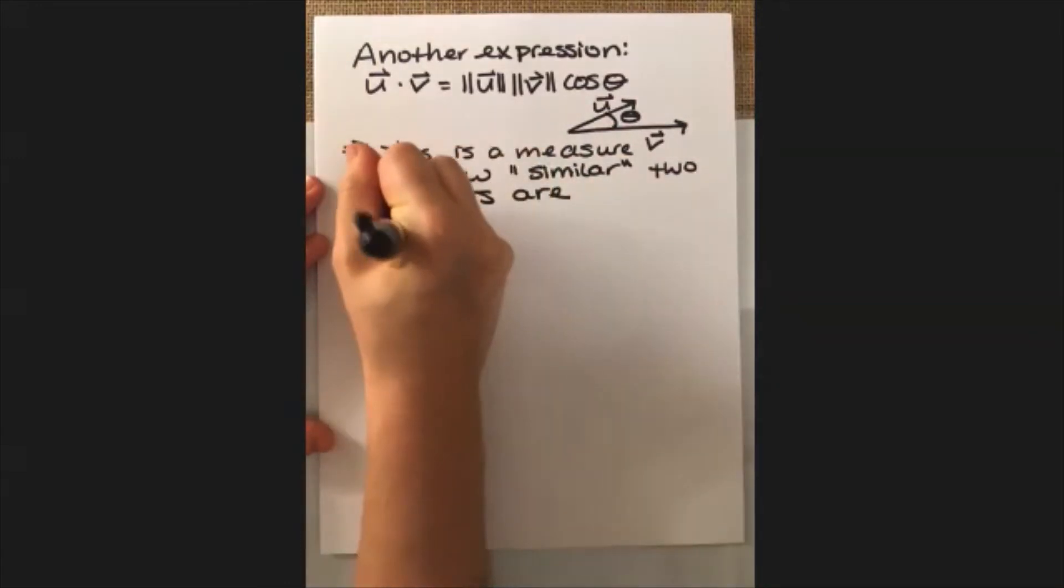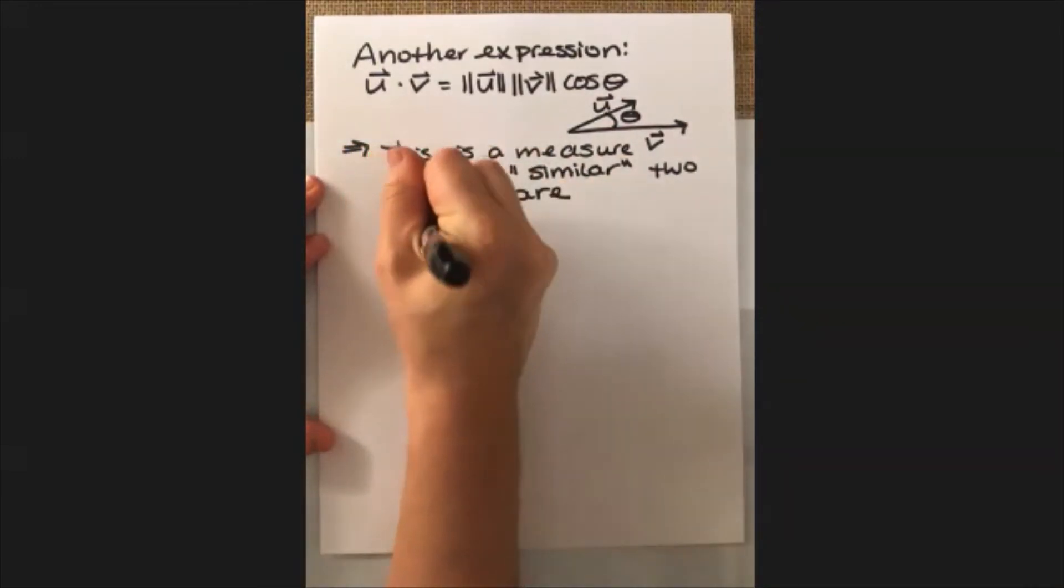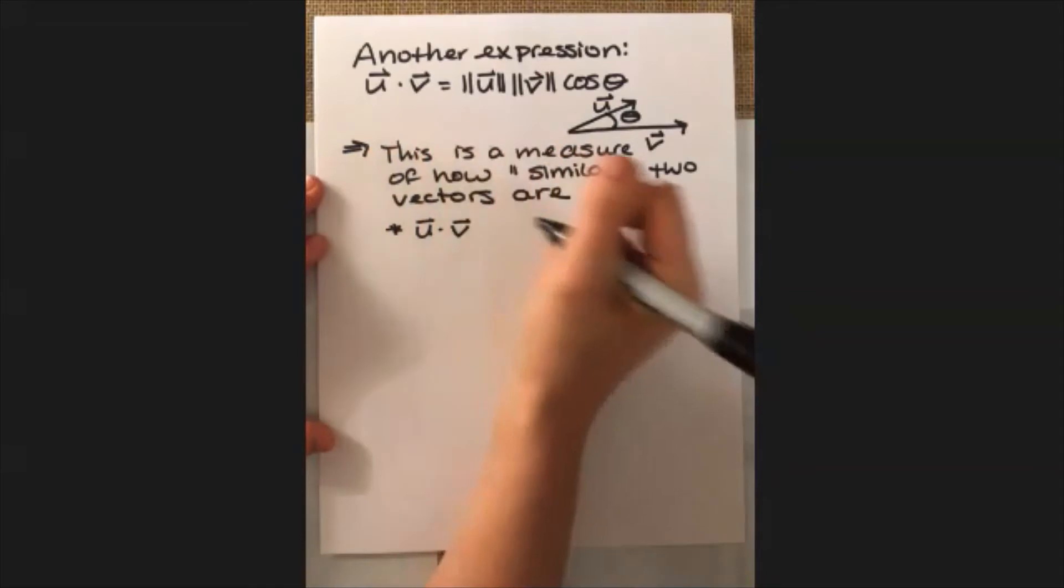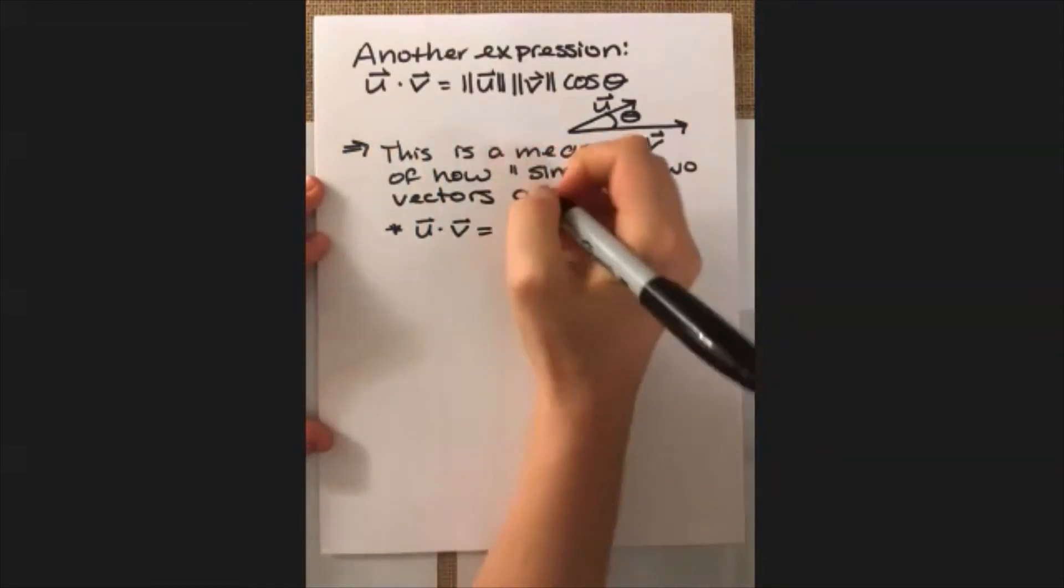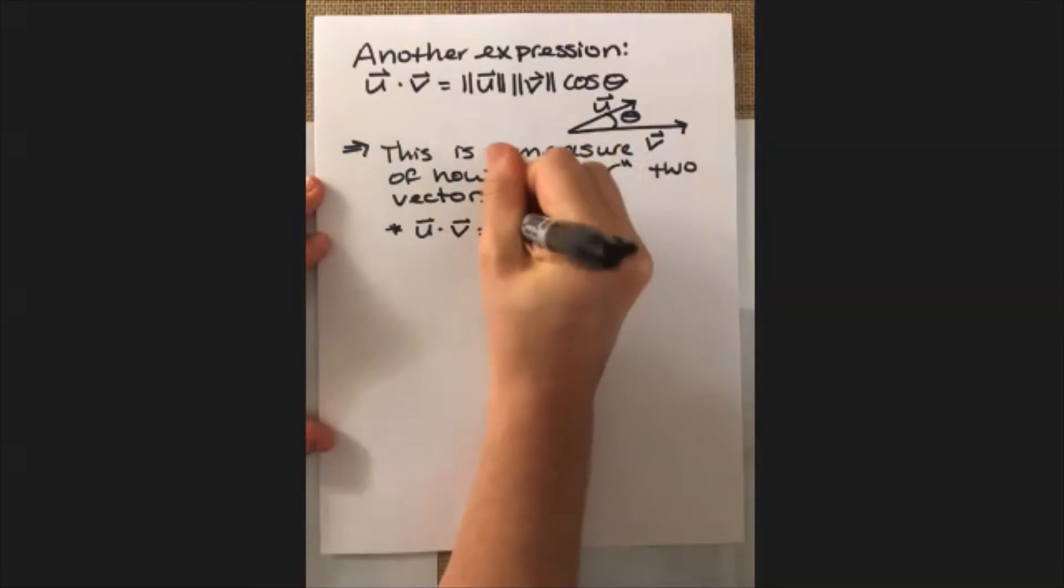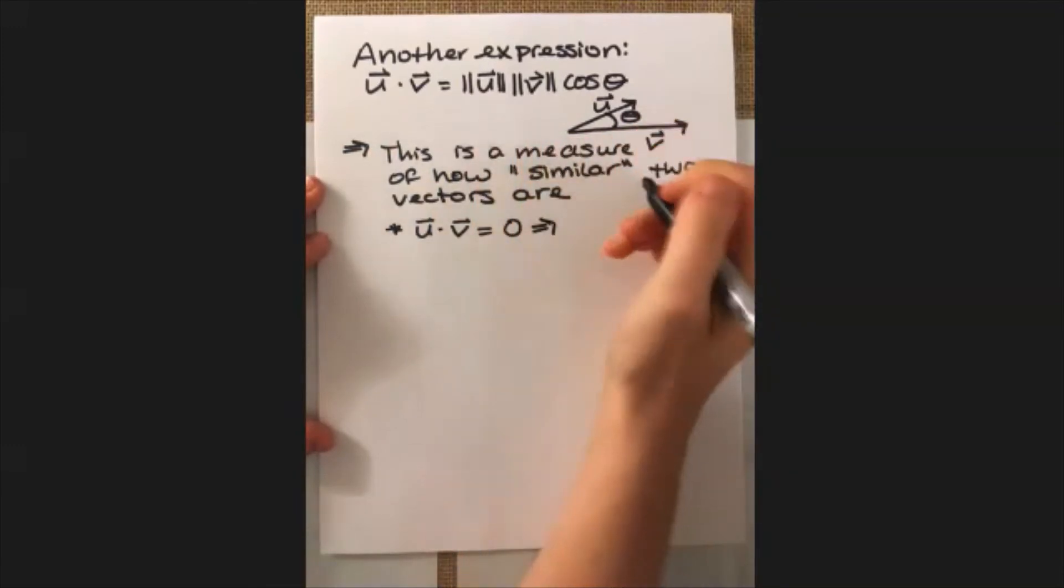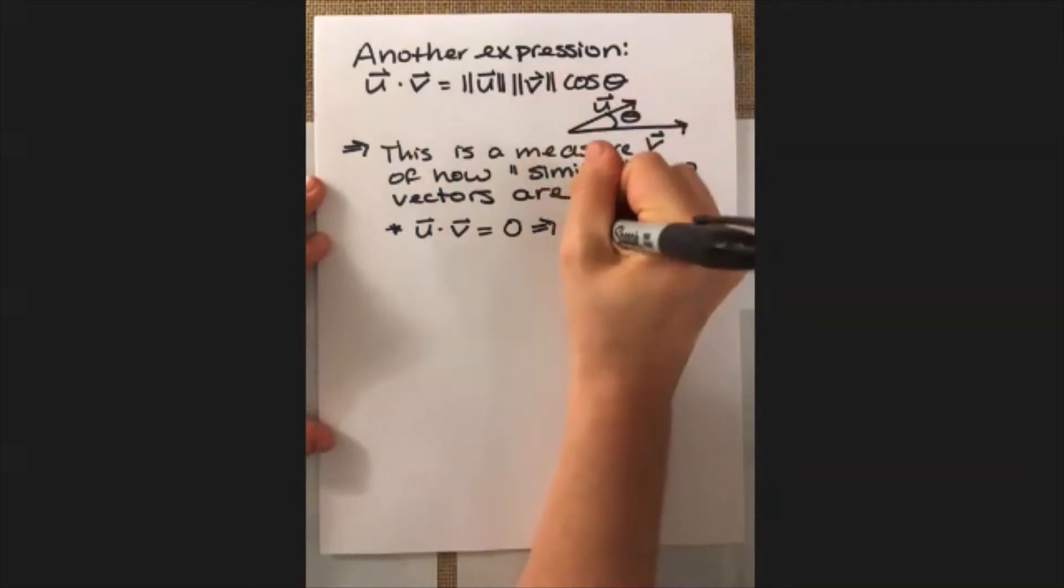And maybe a little bit more specifically what this means is it can tell us whether or not two vectors are orthogonal to each other. So if their dot product is zero, then you know that they're orthogonal to each other because cosine of a right angle is equal to zero.